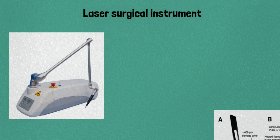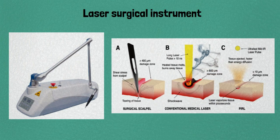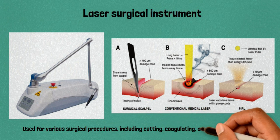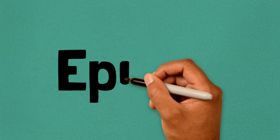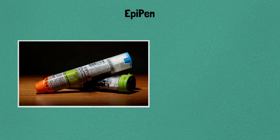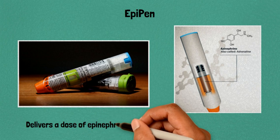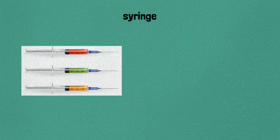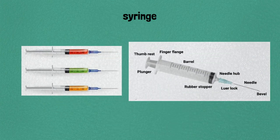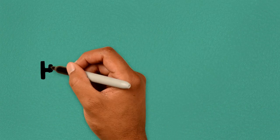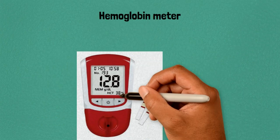Nineteen: laser surgical instrument, used for various surgical procedures including cutting, coagulating, and vaporizing tissue. Twenty: EpiPen, delivers a dose of epinephrine to treat severe allergic reactions. Twenty-one: syringe, used for injecting fluids or medications into the body.